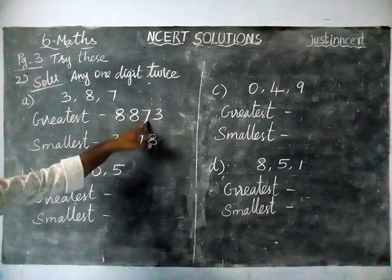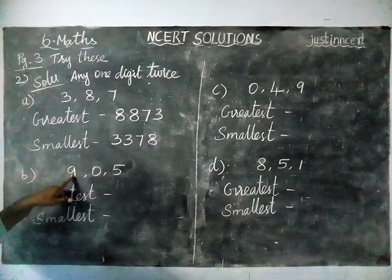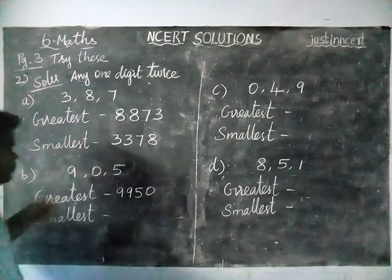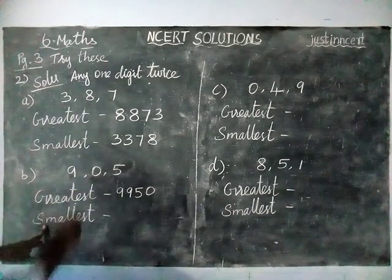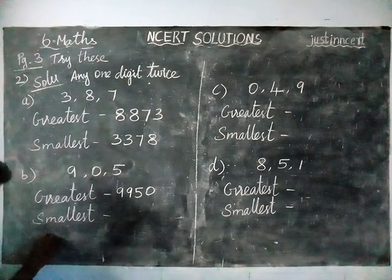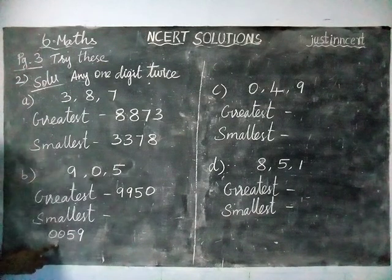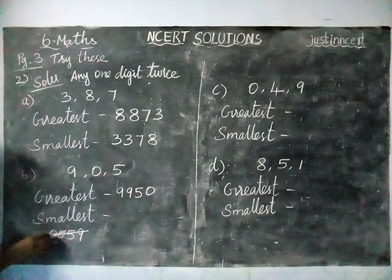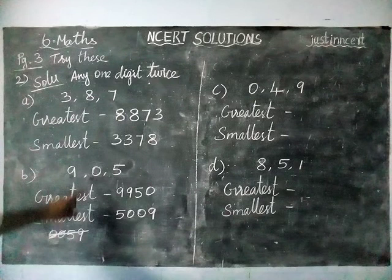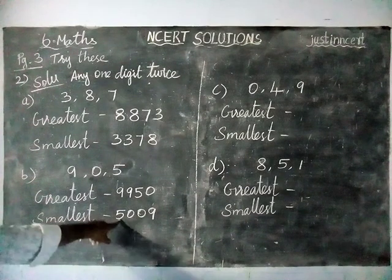Next, option B: digits 9, 0, 5. The greatest number is 9, so I use 9 two times: 9, 9, 5, 0. For the smallest number, listen carefully — 0 is the smallest number, but we cannot use it two times in front, because if you write 0, 0, 5, 9, this will become only a 2-digit number. So we write 5, 0, 0, 9 instead. Greatest value is 9,950 and smallest number is 5,009.